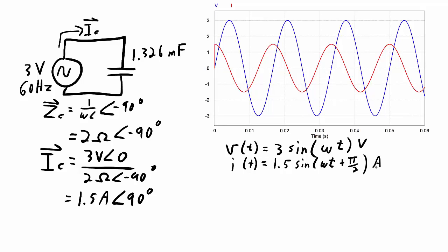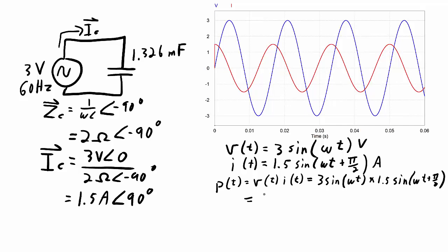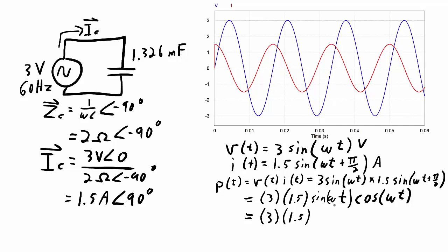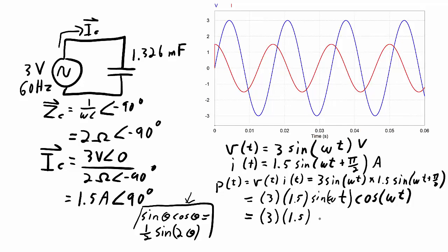The power as a function of time is going to be equal to the voltage times the current. I can write that out as 3 sine omega t times 1.5 sine omega t plus pi over 2. That's equal to 3 times 1.5 times sine omega t, and since the sine omega t plus pi over 2 phase shift is the same as cosine omega t, I'll use a little trigonometry. Looking at sine omega t times cosine omega t: in general, sine theta times cosine theta is equal to one half sine 2 theta. That is a basic trigonometric identity, so I can rewrite sine omega t cosine omega t as one half times sine 2 omega t.